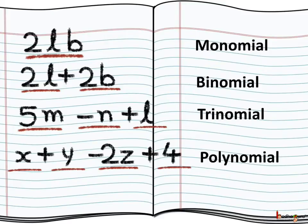Now let us see the different kinds of expressions. An expression like 2l consists of only one term and is called a monomial. The expression 2l plus 2b has two terms and is called a binomial. The next expression is 5m minus n plus l, which has three terms, so it is called a trinomial.